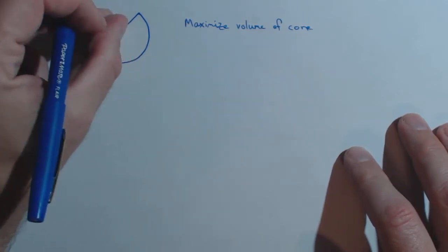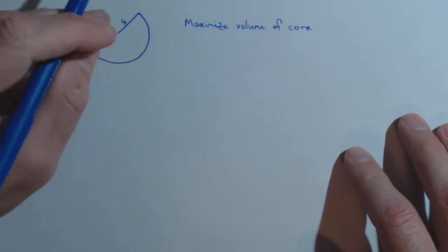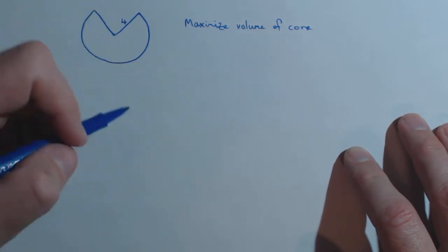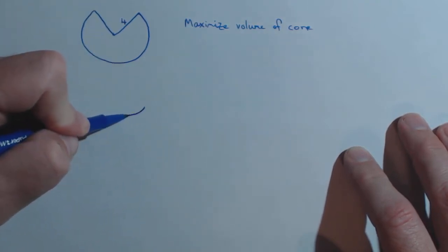So if you connect these two edges now that we've cut out a sector, in this case of radius 4, you get a three-dimensional figure that will be a cone.